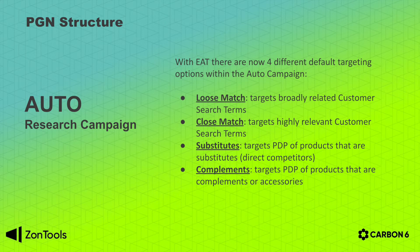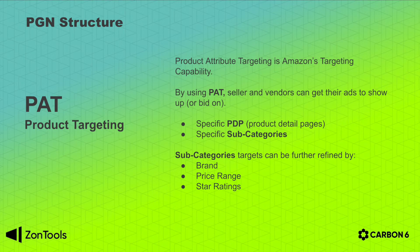So we already covered the exact, phrase, broad, and auto campaign. The fifth campaign we will create for you is the PAT or product attribute targeting. This feature allows you to be more precise and target specific product detail pages, specific competitors, or even your own products with your own advertising.